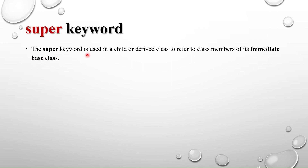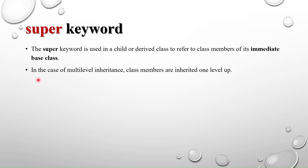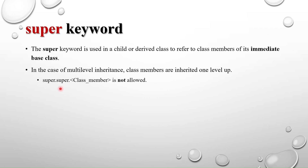The super keyword is used in a child or derived class to refer to the class members of its immediate base class. In the case of multi-level inheritance, class members are inherited one level up when using the super keyword. Using super.super to access a class member is not allowed.